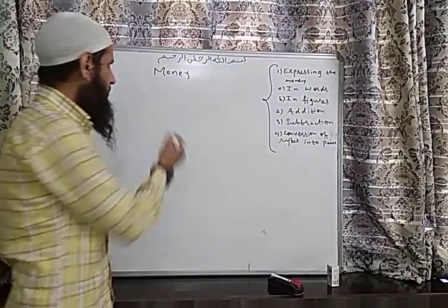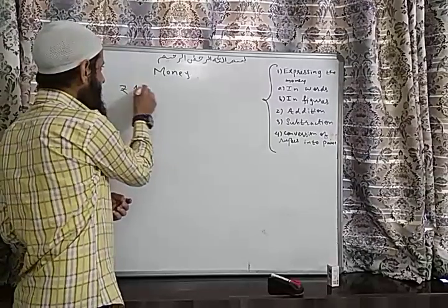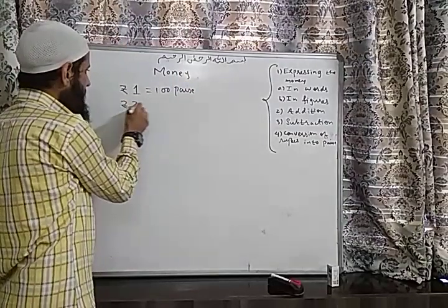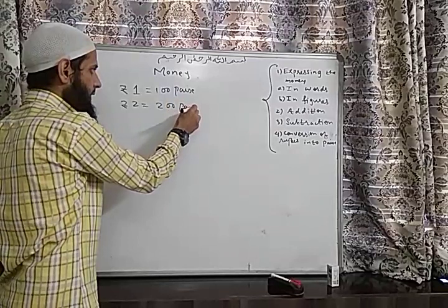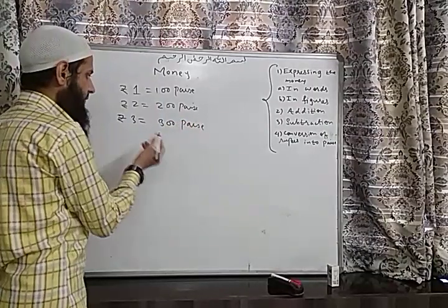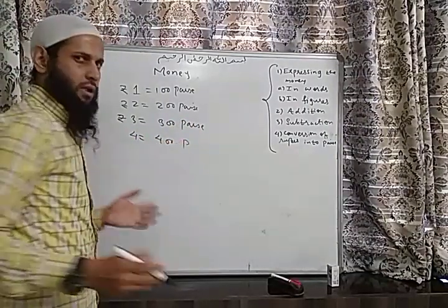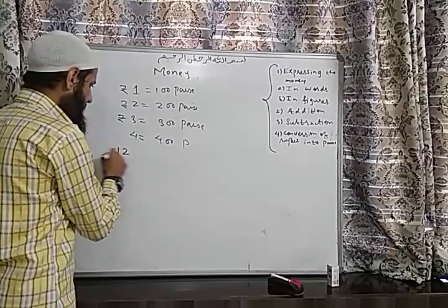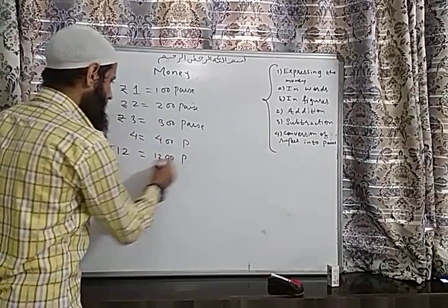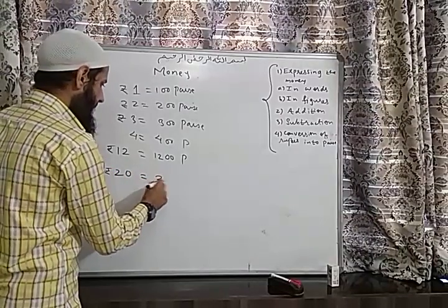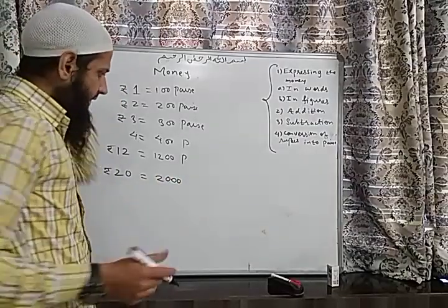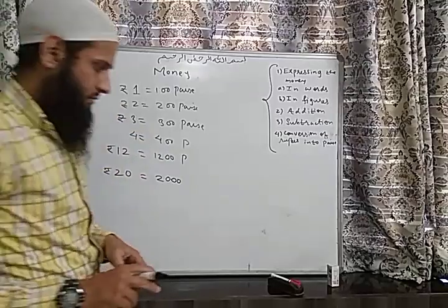Now, one thing which you all know: 1 rupee equals to 100 paise. So if I tell you to convert 2 rupees, it equals 200 paise; 3 rupees equals 300 paise; 4 rupees equals 400 paise. It's very easy — if I tell you 10 rupees, you just add two zeros after the given number, so it will be 1000 paise. If I tell you 20 rupees, you add two zeros after 20, so it will be 2000 paise. So it's very easy to convert rupees into paise.